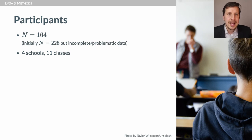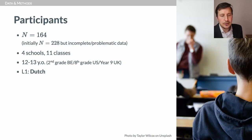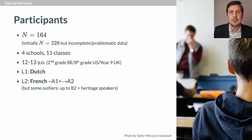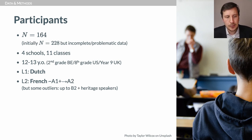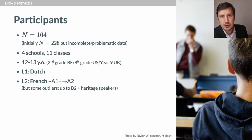These are 12 to 13-year-old students in second grade in Belgium. 97% are native speakers of Dutch and they are learning French — the target language — in which most of them are at an A1 or A1-plus level. There are some outliers, with a few students reporting using French at home as heritage language speakers. These outliers are actually welcome because they expand our range of variation.